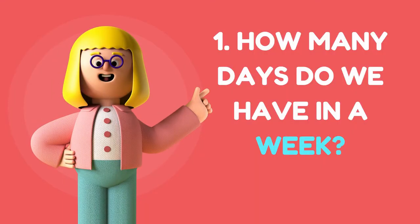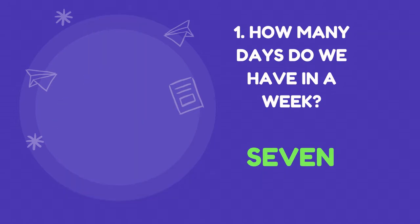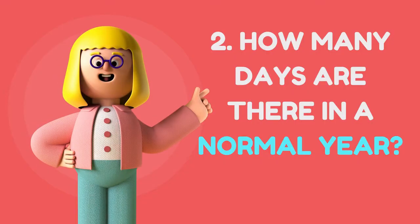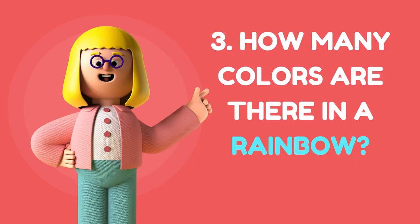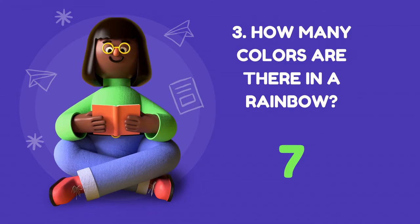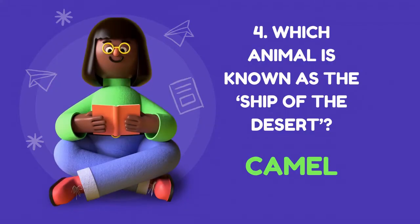How many days do we have in a week? The answer is 7. How many days are there in a normal year? The answer is 365. How many colors are there in a rainbow? The answer is 7. Which animal is known as the ship of the desert? The answer is camel.